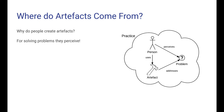This figure repeats what I said earlier. There is some practice, and inside that practice there are people. These people experience or perceive some problem. They would like to have a solution, and a possible solution is an artifact. All of this is quite straightforward. The main issue here in this figure is what can be meant by a practice.